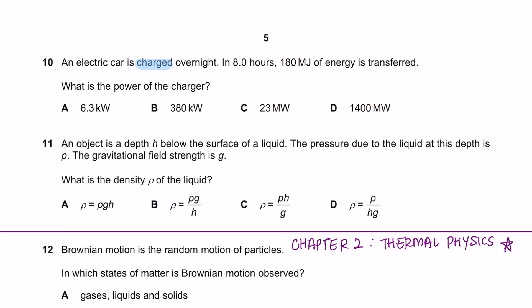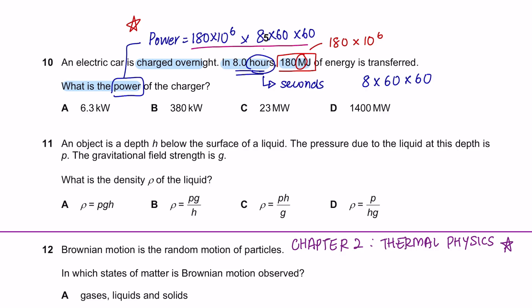Question 10. An electric car is charged overnight in 8 hours. 180 mega joules of energy is transferred. What is the power of the car charger? This is a very direct question. We are going to look for the power and the formula to calculate power is energy divided by time. Formulas are very important when it comes to physics, so make sure you have memorized them before your exams. The energy here is 180 mega joules and you have to convert this into joules. Mega is times 10 to the power of 6. And the time is also given which is in hours. You have to convert this into seconds. And that would be 8 hours times 60 minutes times 60 seconds. You can put all these values into your calculator and you will get a value of 6,300. And the unit for power is watts. And if I convert it into kilowatts, I would get 6.3. So the answer is A.